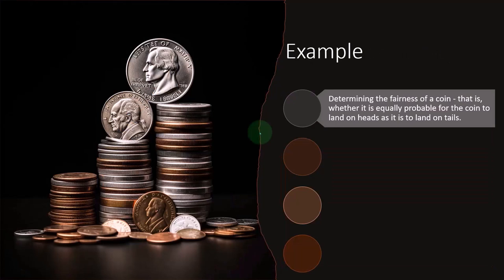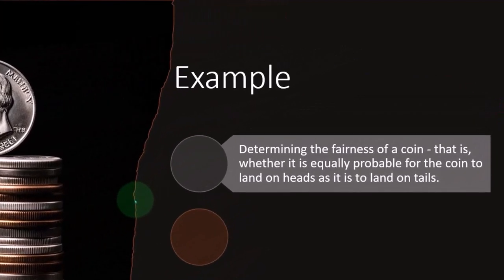Let's take a look at an example here. We want to be determining the fairness of a coin. That is whether it is equally probable for the coin to land on heads as it is to land on tails. In other words, we're given a coin, a quarter, for example.